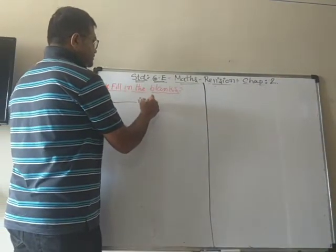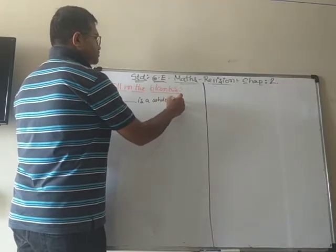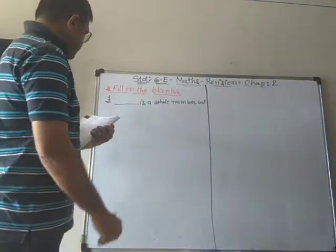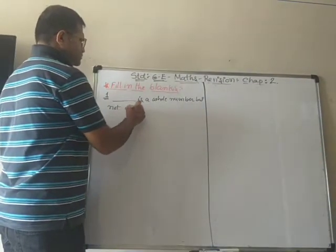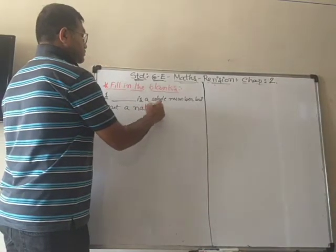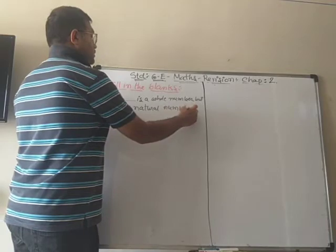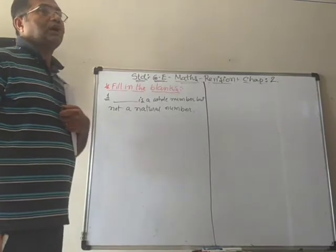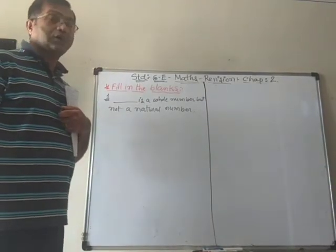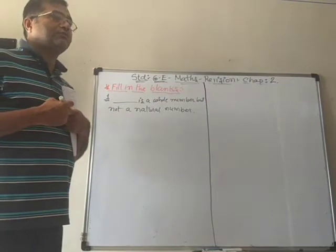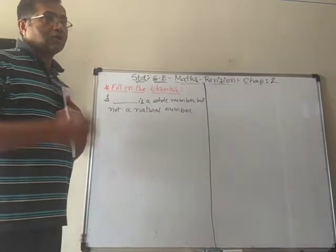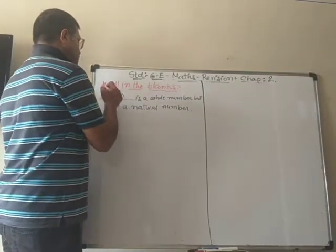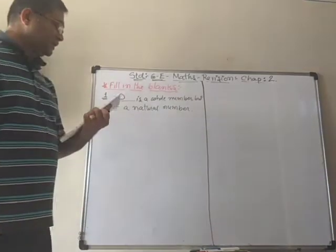Blank is a whole number but not a natural number. We know that zero, one, two, three, four are the whole numbers. And one, two, three, four and so on are the natural numbers. So here you can see that zero comes in the whole numbers but it is not a natural number.